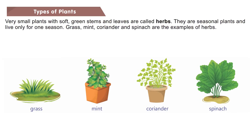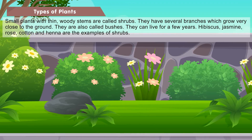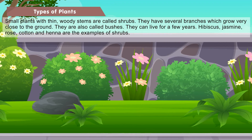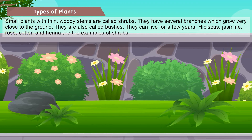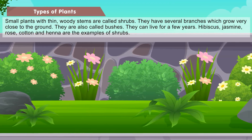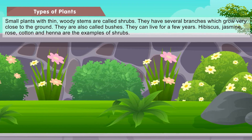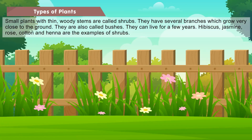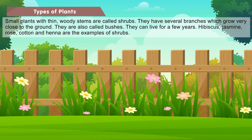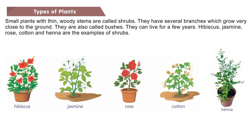Grass, mint, coriander and spinach are examples of herbs. Small plants with thin, woody stems are called shrubs. They have several branches which grow very close to the ground. They are also called bushes. They can live for a few years. Hibiscus, jasmine, rose, cotton and henna are examples of shrubs.